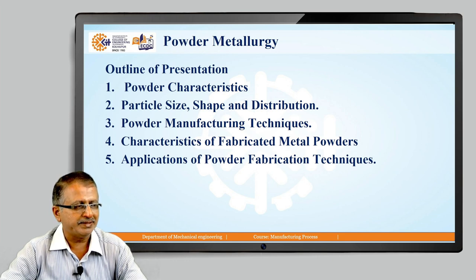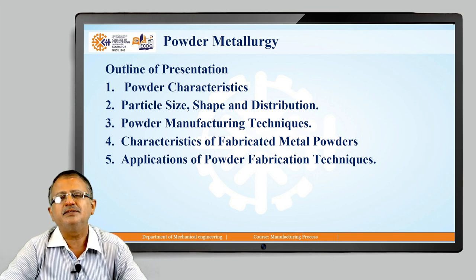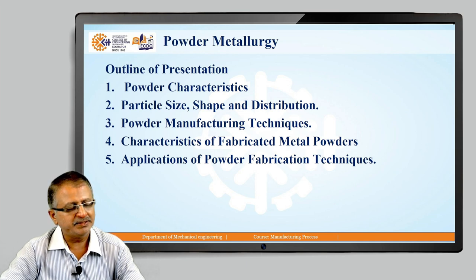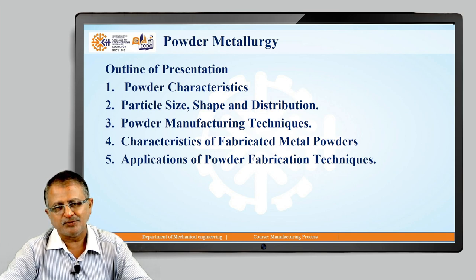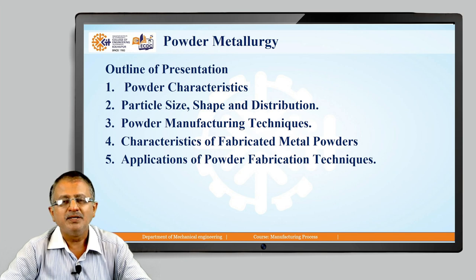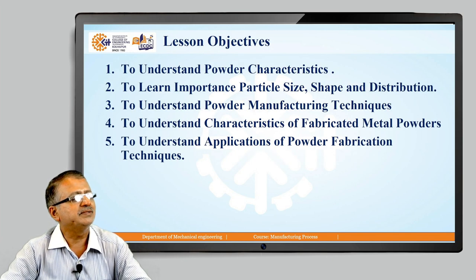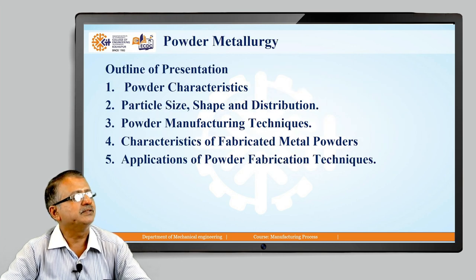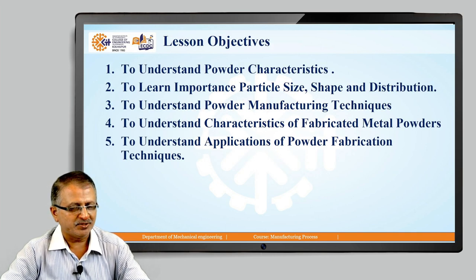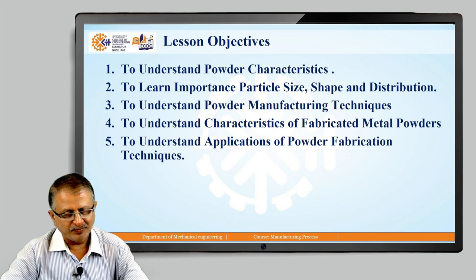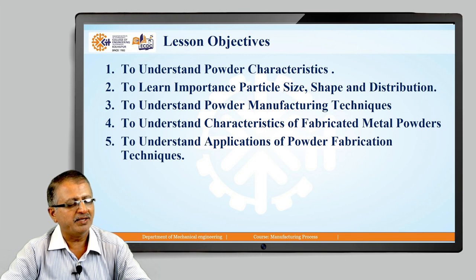In powder characteristics, let us discuss what affects the final product. Particle size, shape and distribution are very crucial. We are going to understand how these affect the process. Various powder manufacturing techniques exist, and the technique suitable for a particular material enhances its quality as well as exclusiveness. After that we will understand the application of powder fabrication techniques. The lesson objectives are to learn and understand powder characteristics, particle size, shape and distribution, various powder manufacturing techniques, characteristics of fabricated metal powders, and applications of powder fabrication techniques.